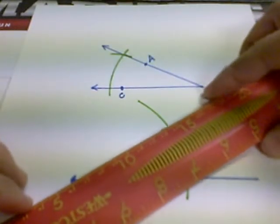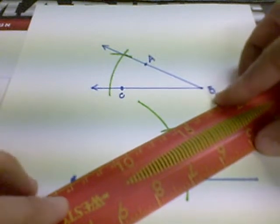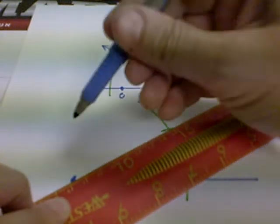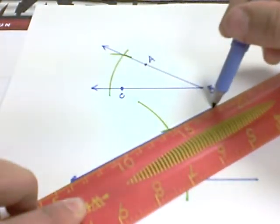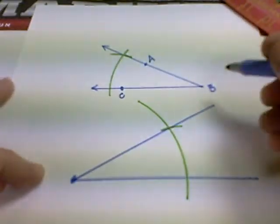Then we can connect our vertex to our intersection point and draw the ray through that point.